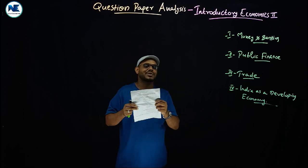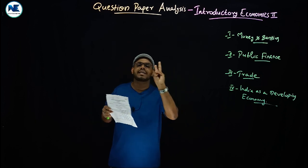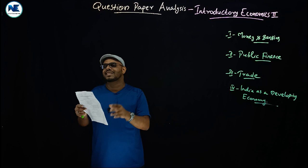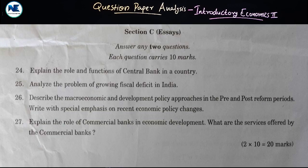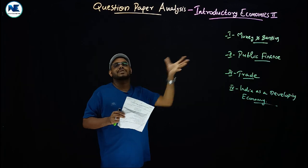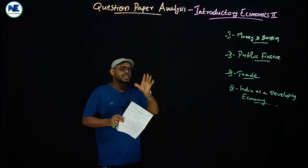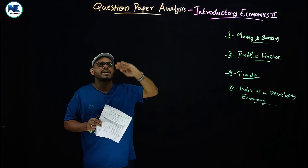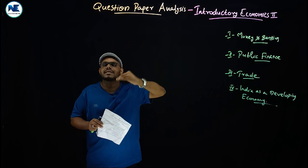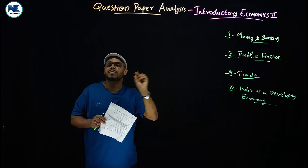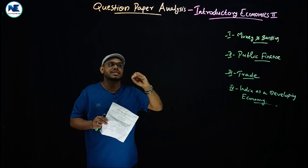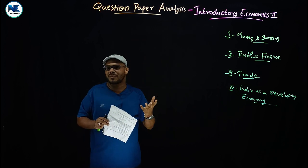Now Section C — essay questions, with 4 questions. The twenty-fourth question: explain the role and functions of the central bank in a country. This is from Module 1. Functions of the central bank include the definition, monopoly of note issue, and custodian of cash reserves of commercial banks, among others.